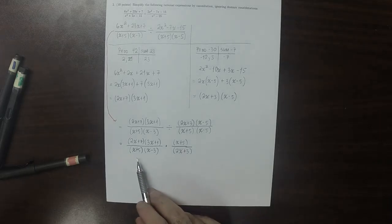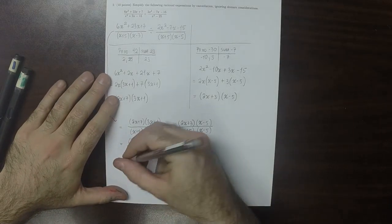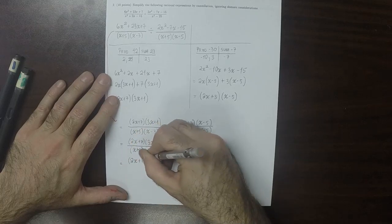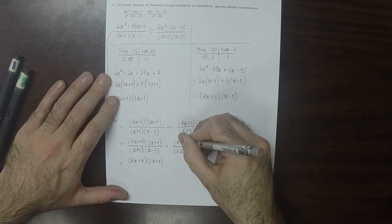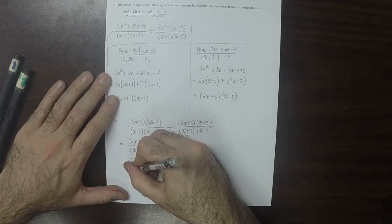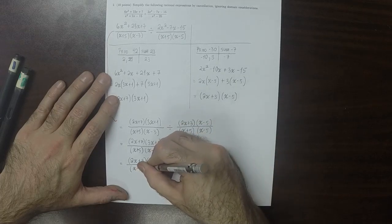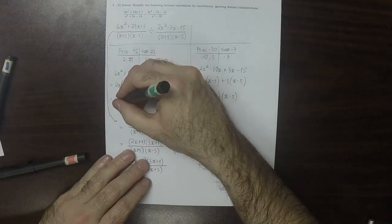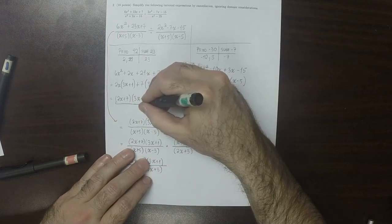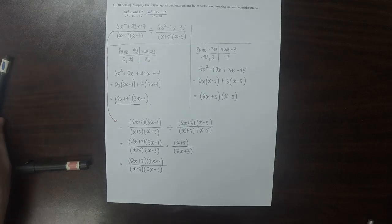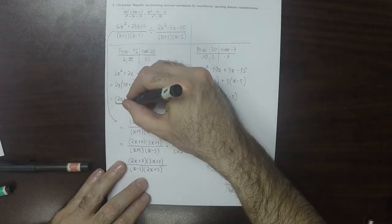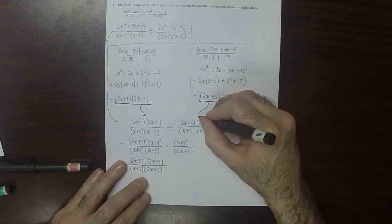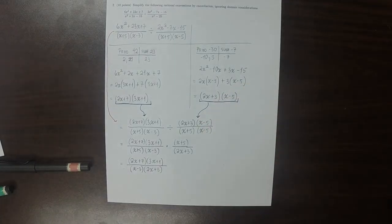Now this x plus 5 will cancel with that x plus 5, and then all that remains is 2x plus 7 times 3x plus 1 over x minus 3 times 2x plus 3. So to be clear, this bit went here, and this bit went here. Okay, and then question 3.